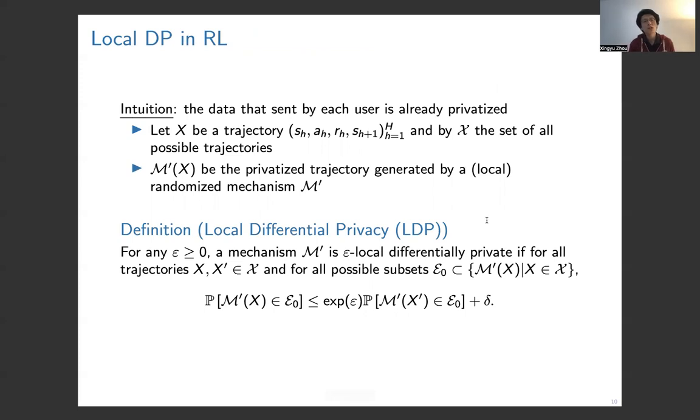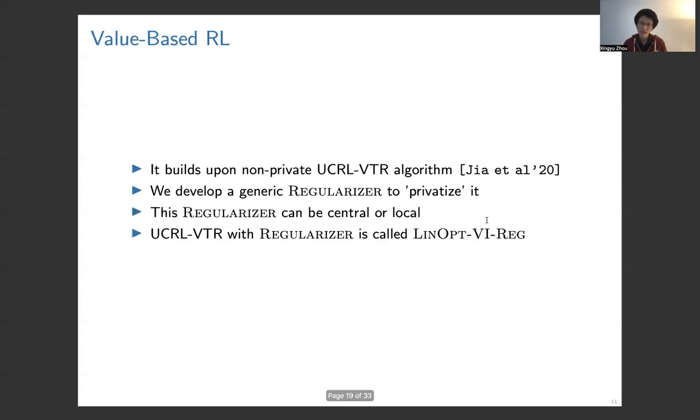Now we come to the local model. In the local model, the idea is quite simple. Each user uses a mechanism to privatize her data directly. We use capital X to denote the data, which in this case is a trajectory, and M' could be any mechanism which can guarantee that the mechanism operates on two neighboring data and the output is similar.